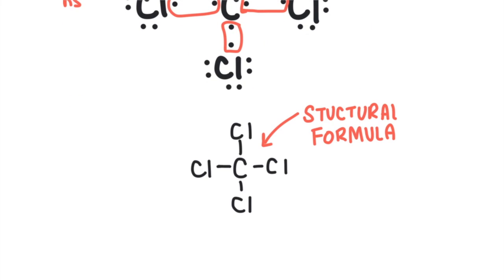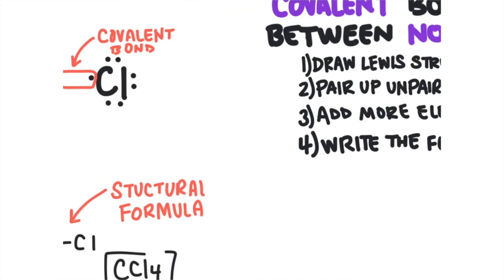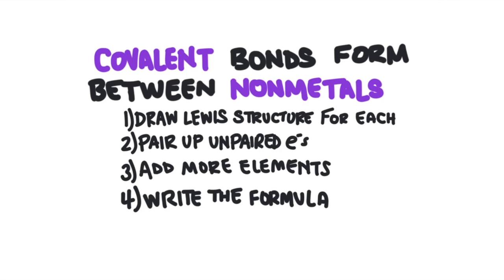Now redraw all the shared electrons as a covalent bond — this is called a structural formula. Write the formula by counting up each element: there's 1 carbon and 4 chlorines, so it's CCl4. To summarize covalent bonds: draw the Lewis structure of each element, pair up the unpaired electrons, add more elements if needed, then write the formula using subscripts to identify the amount of each element.